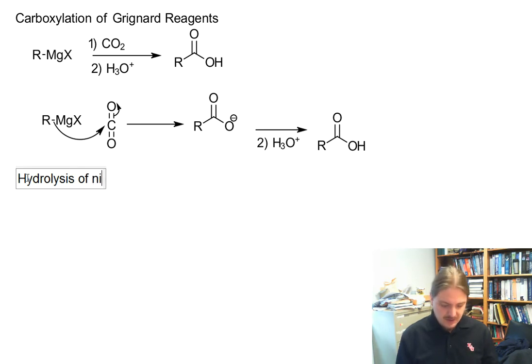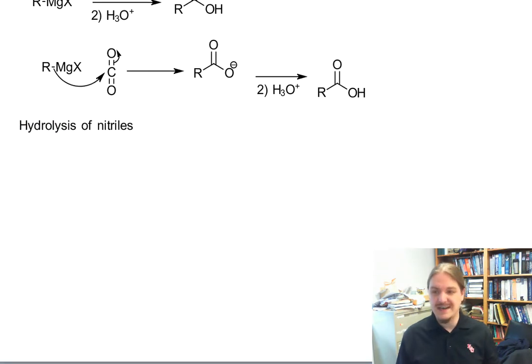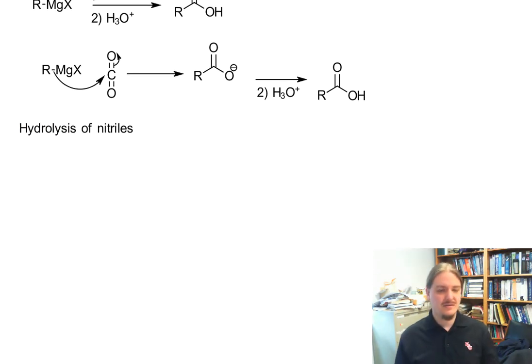Then generally the last kind of reaction that synthesizes carboxylic acid are the hydrolysis of carboxylic acid derivatives. Those include esters, amides, acid halides, anhydrides and nitriles. And all of these reactions are going to be covered in more detail in the subsequent videos on those functional groups and the types of reagents and things that are needed, but the nitriles are